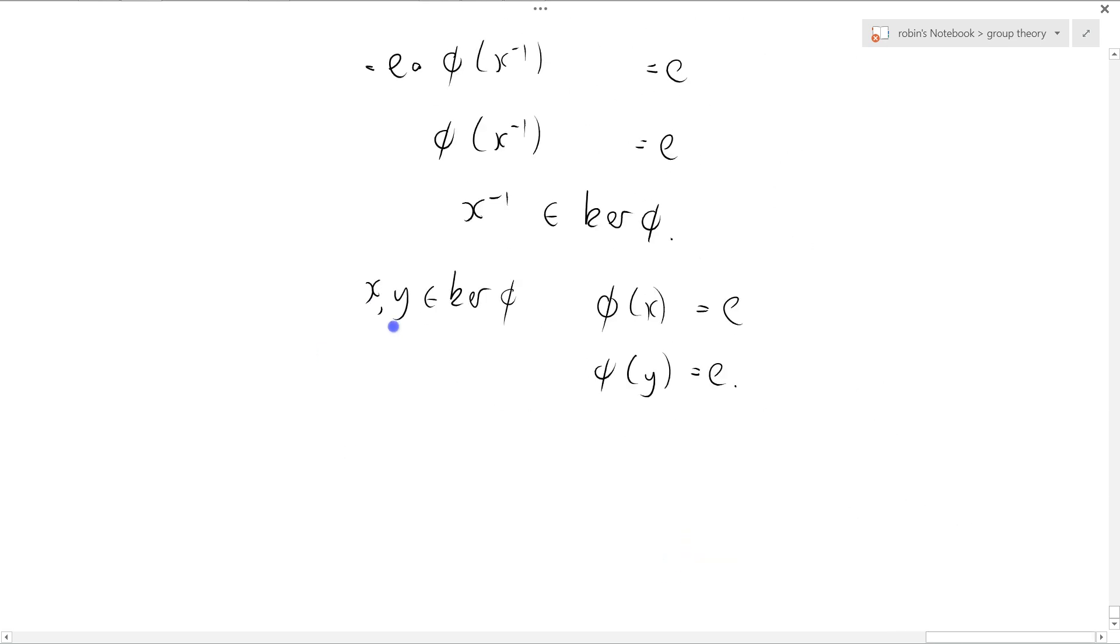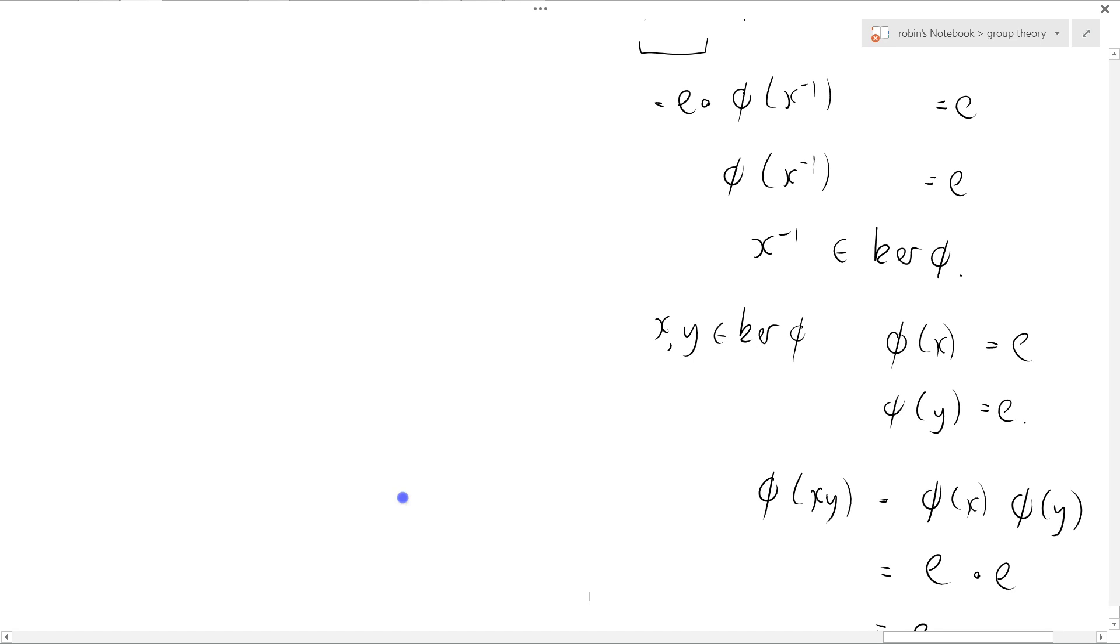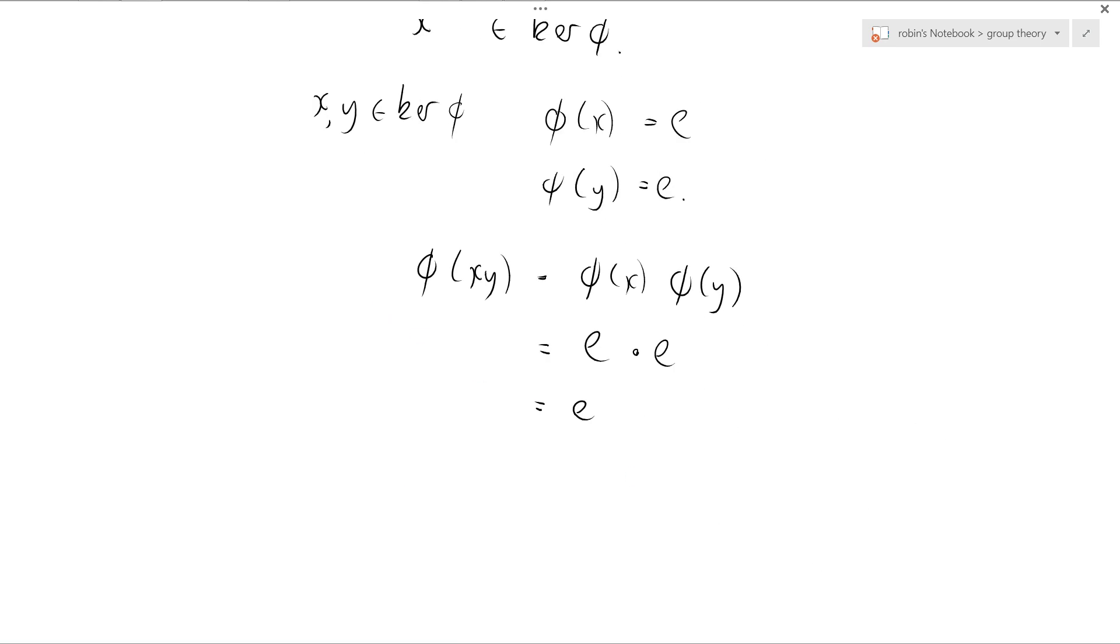Oops. So phi of XY equals phi of X phi of Y, because phi is a homomorphism, equals E composed with E, equals E. And so what we've shown here is that phi of XY equals E, and therefore XY is a member of ker phi, by definition. So that's the second bit.